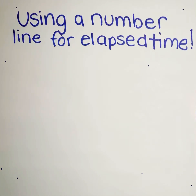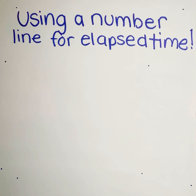Hey guys! Today I'm going to show you how to solve a word problem using a number line for elapsed time. So let's say one of your word problems is asking you to find the end time of a trip that someone is taking, but they give you a start time and the time that has passed.